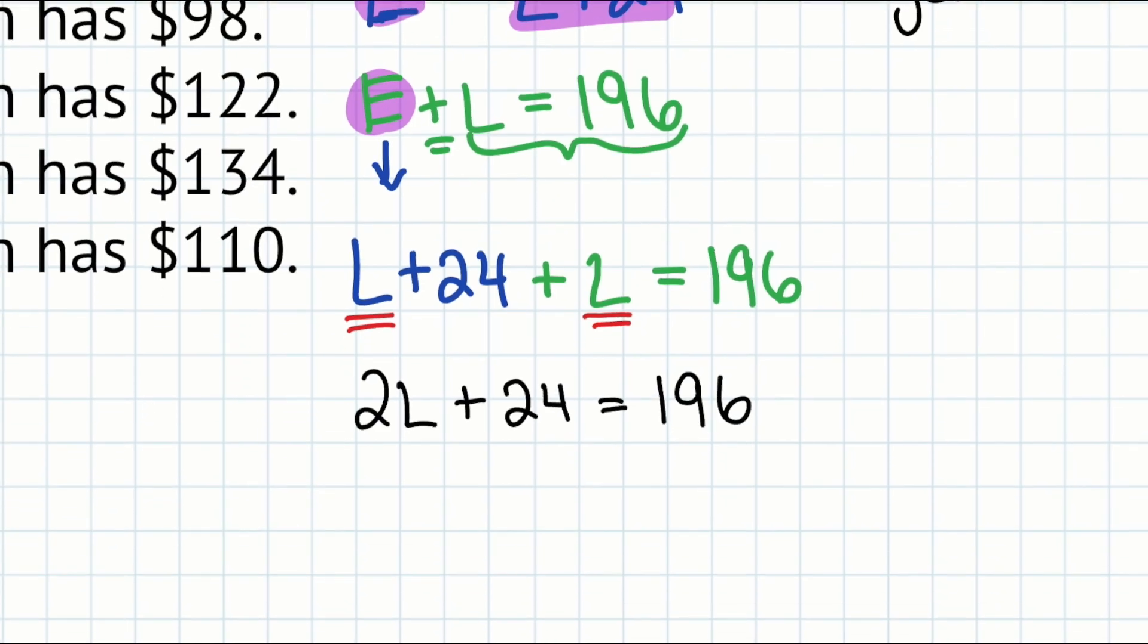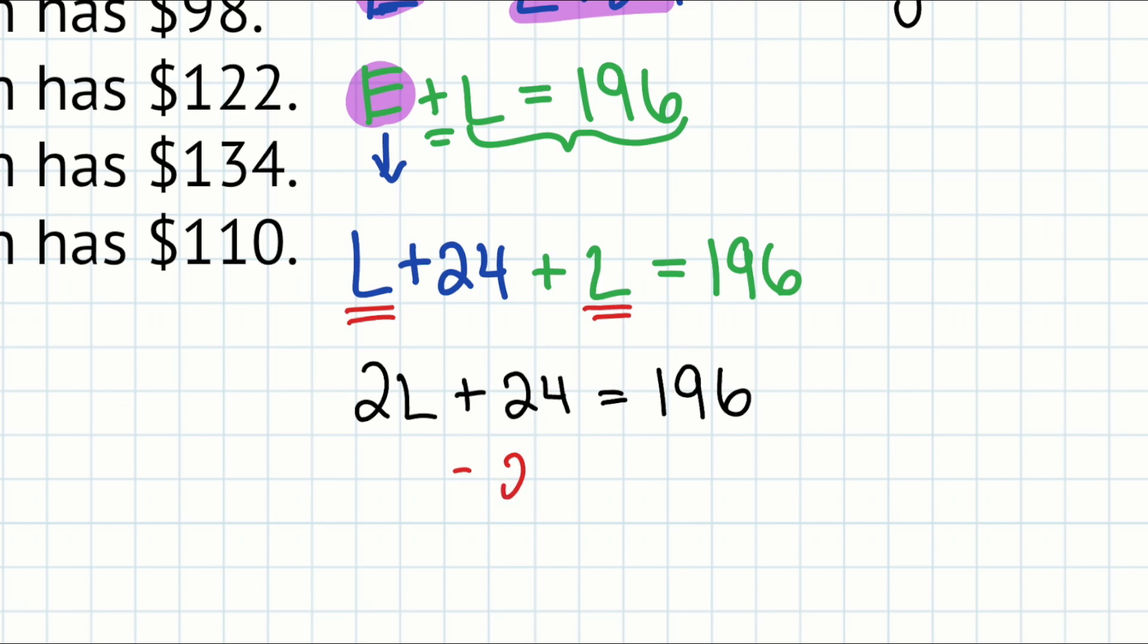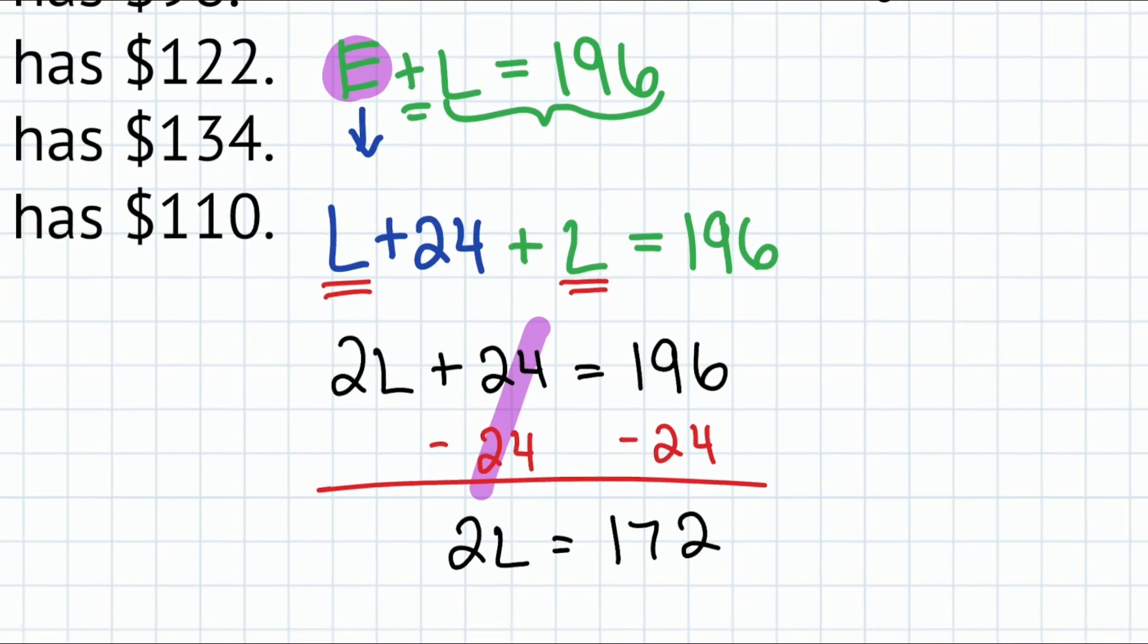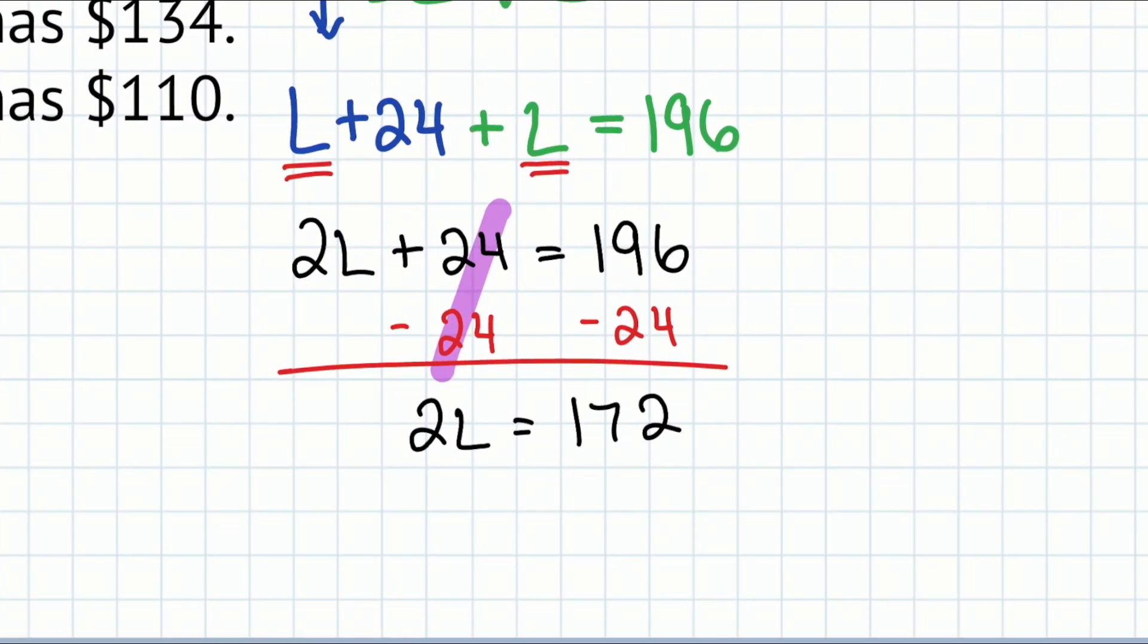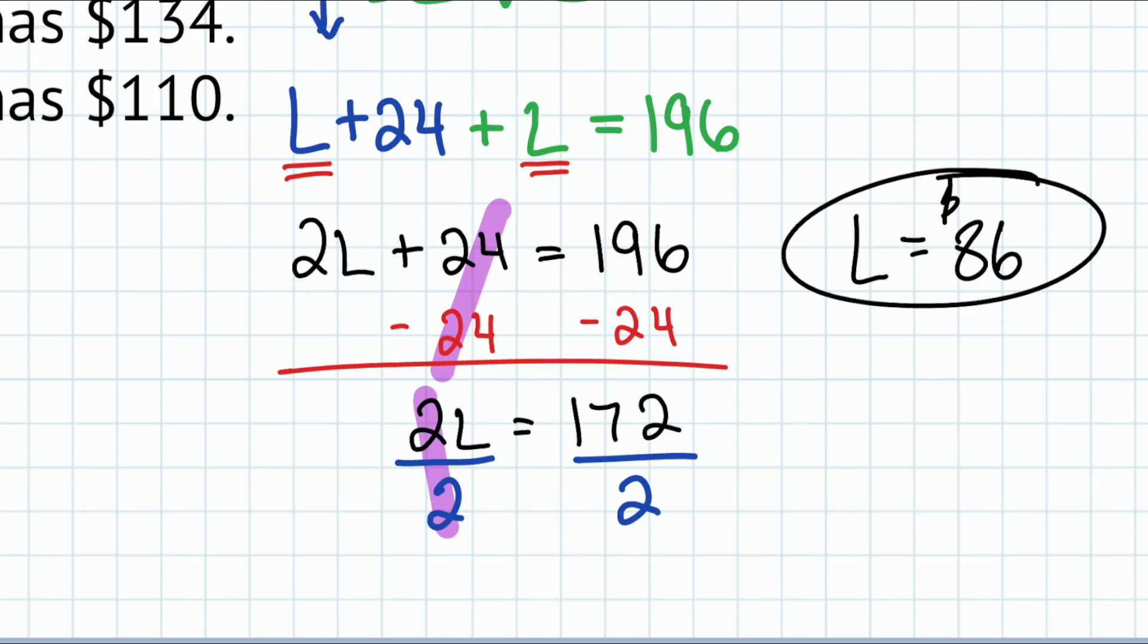Now that we have this, we can continue on by subtracting 24 from both sides. That's going to cancel out on the left side, leaving us with 2L equals 172. And then from here, all we have to do now is divide both sides by two and we're done. So as we divide both sides by two, another cancellation and we'll be left with Lily equals $86. Booyah.